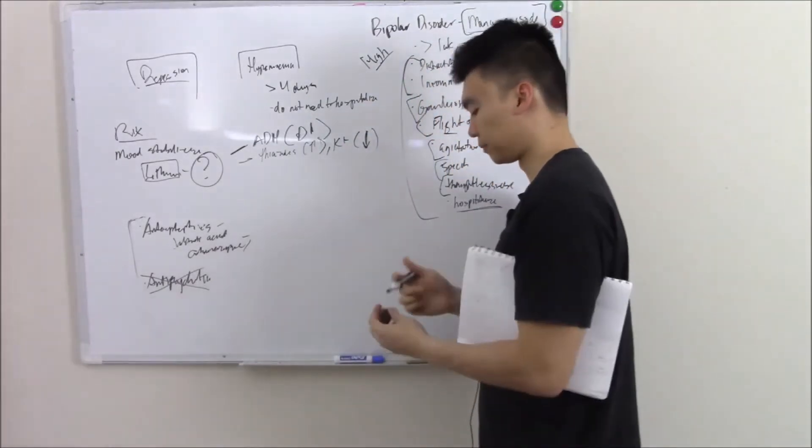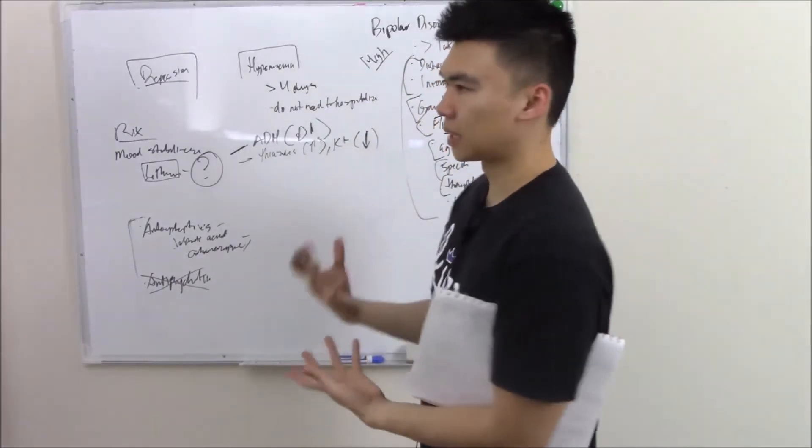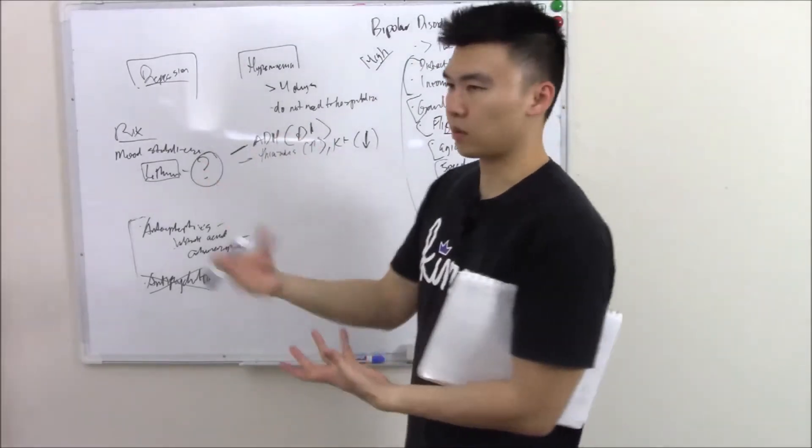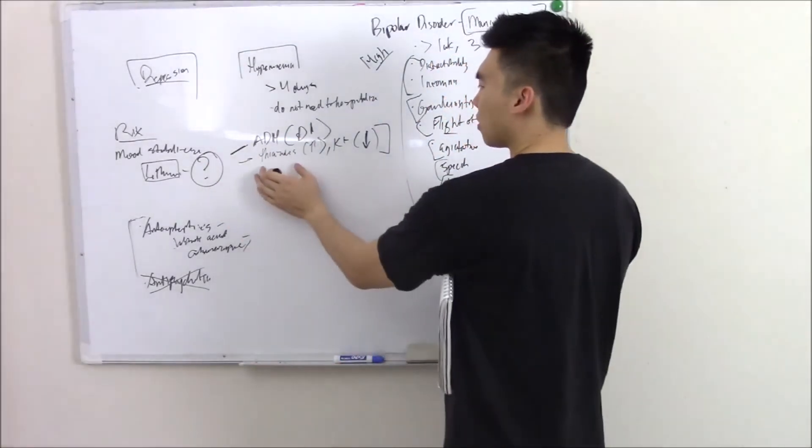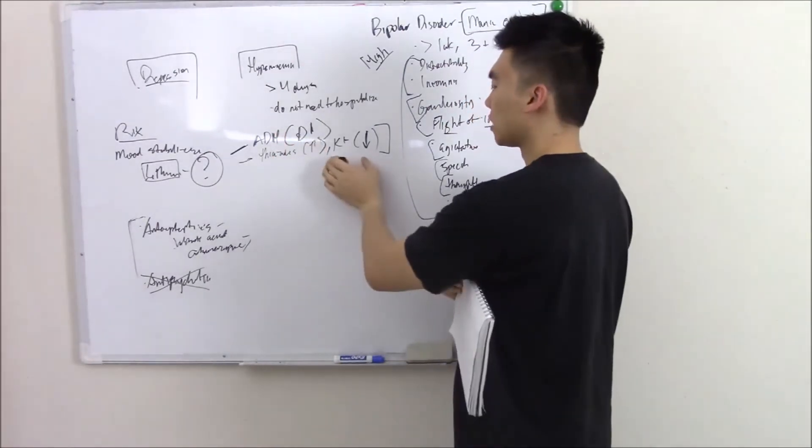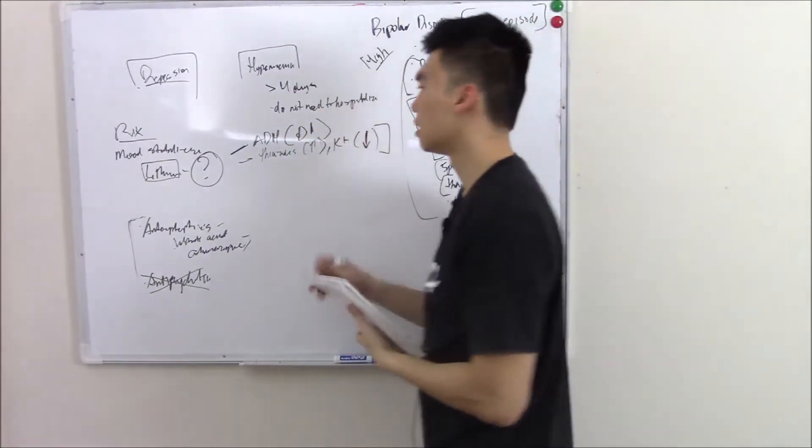The exact mechanism is not quite known. You might say thiazides just kind of block lithium reabsorption, but I really doubt they'll ask you about the mechanism. But just know thiazides increase toxicity, potassium sparing decrease toxicity. That's your kidneys.